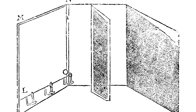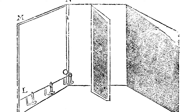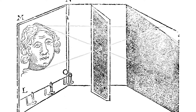Why did the image look like this? Light travels in a straight line, which means when it can only go through a small opening and it's coming from different angles, it has to keep traveling straight and project on the surface right in front of it. This causes the image to appear upside down and backwards.